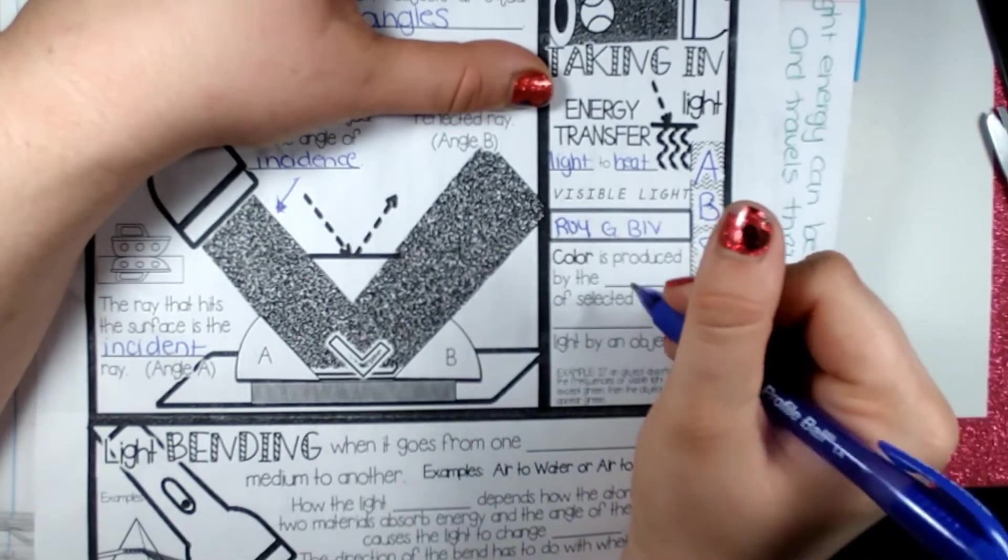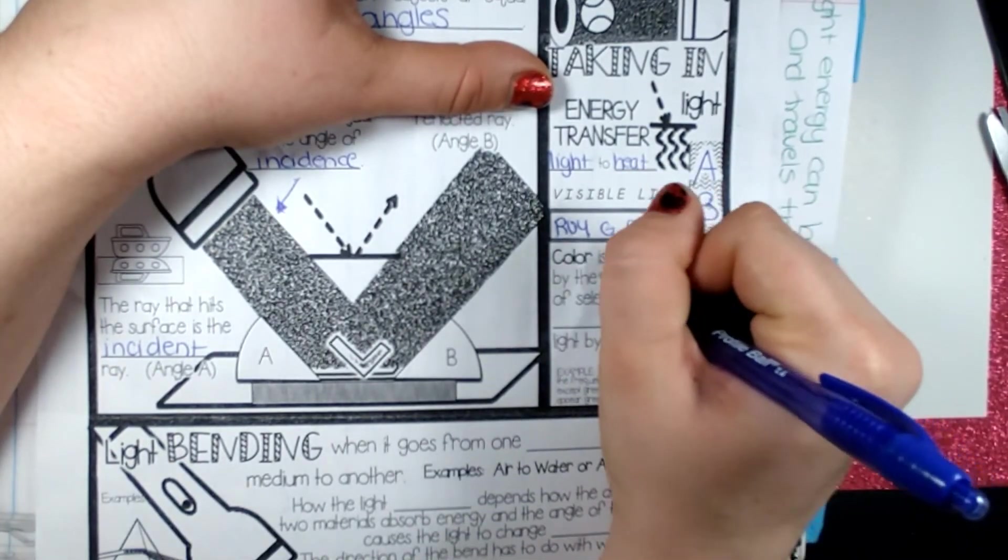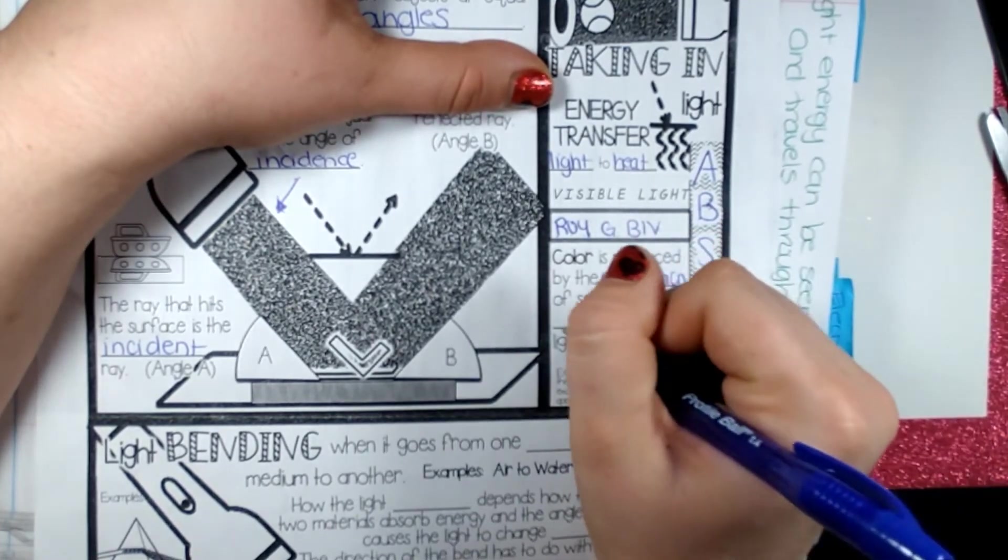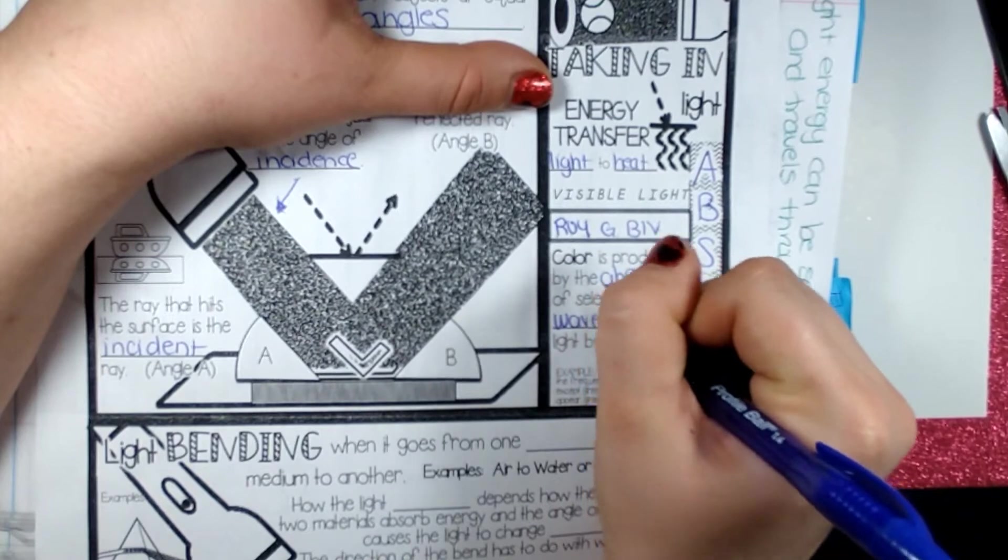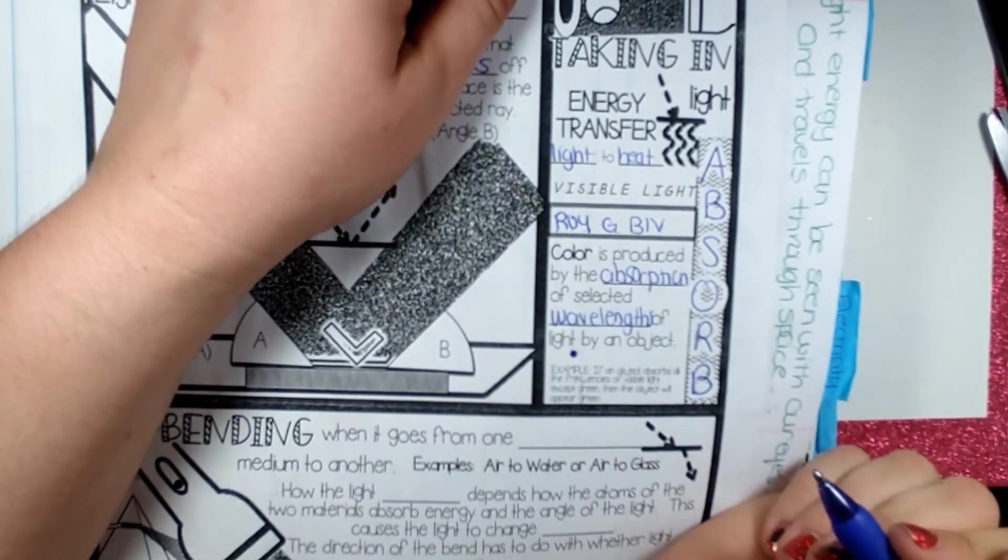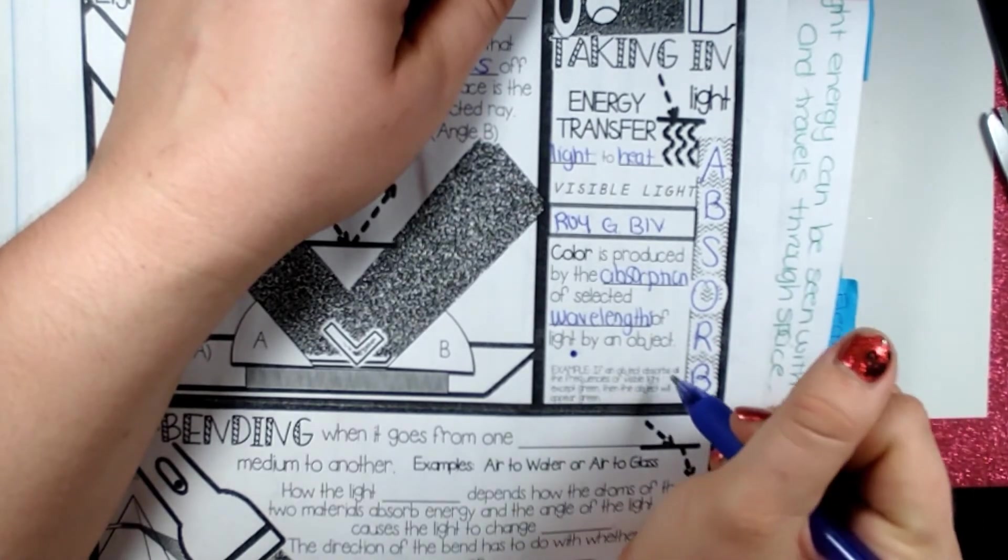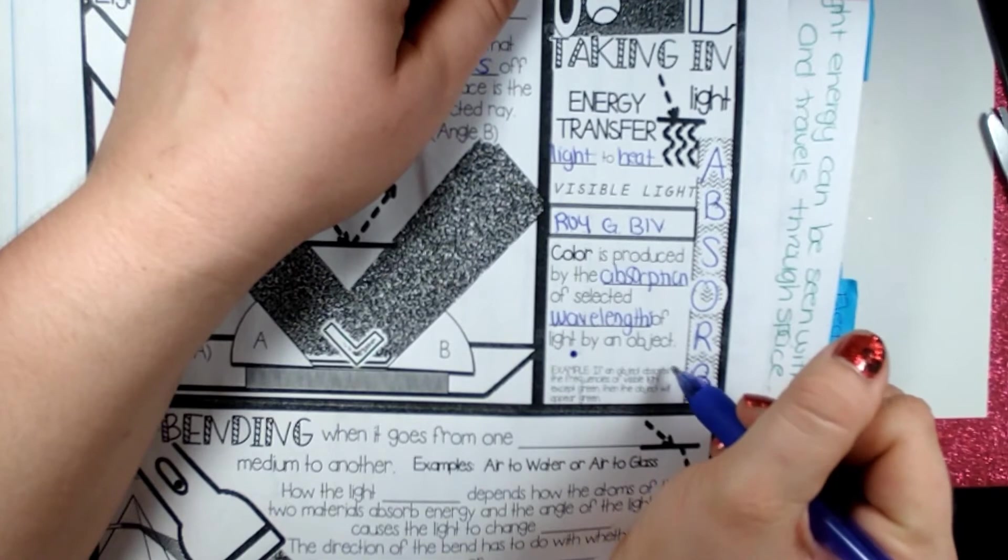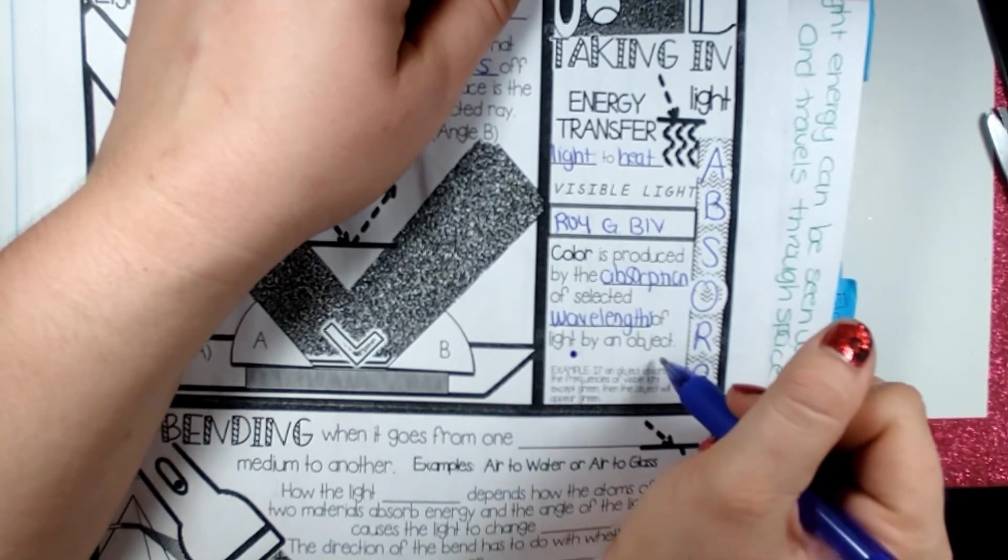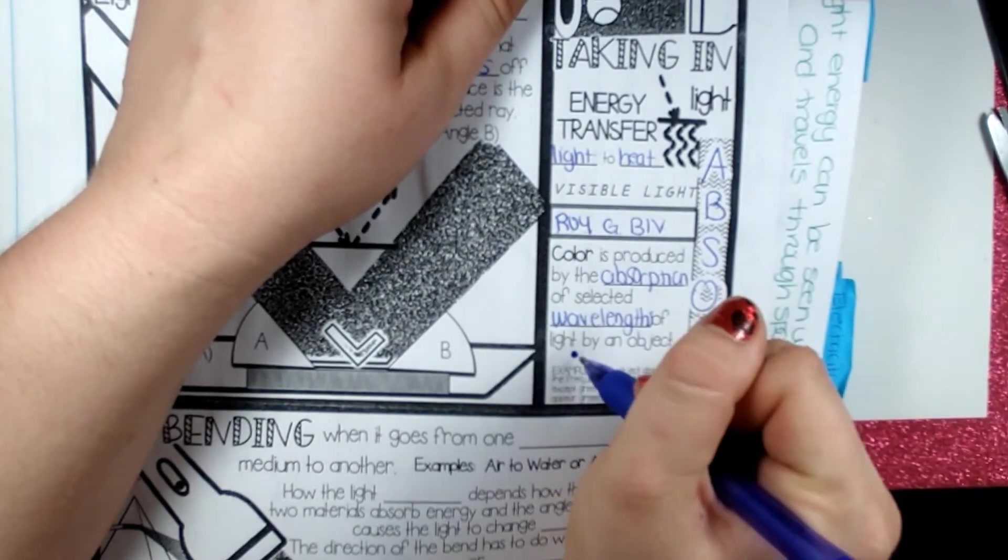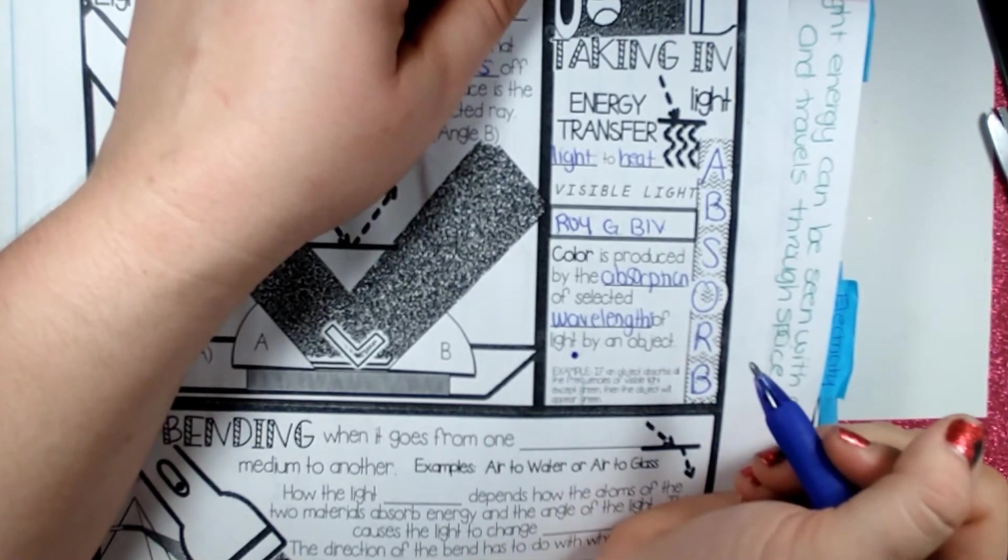Absorb. Color is produced by the absorption of selected wavelengths. So this is how color works. Object is blue. The object will appear blue if the object absorbs all the color wavelengths except for blue. So the color that is reflected is the color that you see.